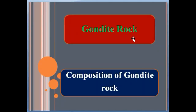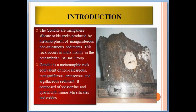Today we talk about gondite rock, including its composition. Gondite are manganese silicate oxide rocks produced by metamorphism of manganiferous non-calcareous sediments. This rock occurs in India mainly in the Precambrian Saucer Group. Gondite is a metamorphic rock equivalent of non-calcareous manganiferous arenaceous and argillaceous sediment, composed of spessartine and quartz with minor manganese silicates and oxides.